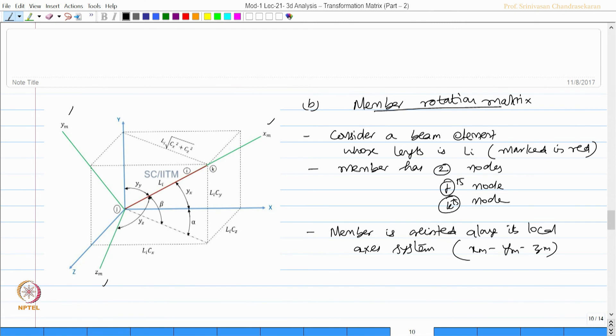Now, this local axis system - that is xm, ym, zm - is placed arbitrarily in space with reference to the standard reference axis system x, y, z. The reference axis system is x, y, z; local axis system is xm, ym, zm.